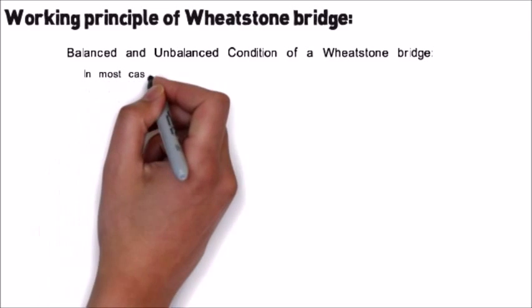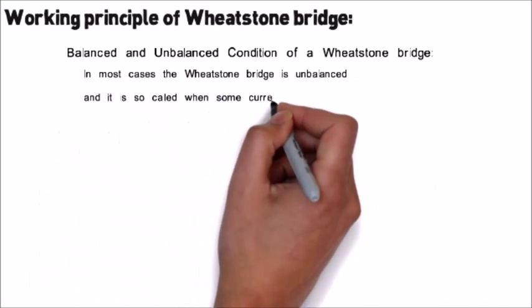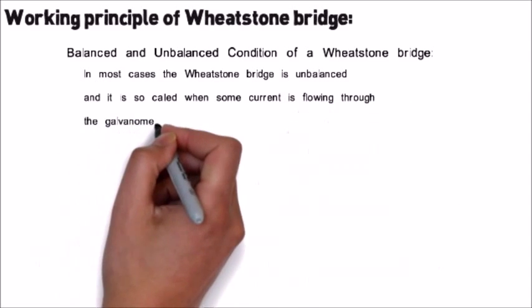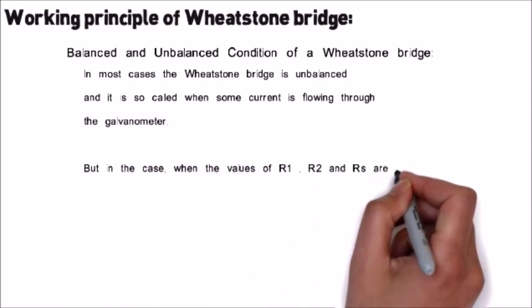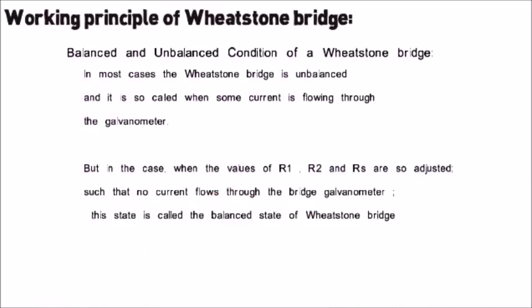In most cases the Wheatstone Bridge is unbalanced, which is when some current is flowing through the galvanometer. But when the values of R1, R2 and RS are so adjusted such that no current flows through the bridge galvanometer, this state is called the balanced state of Wheatstone Bridge.